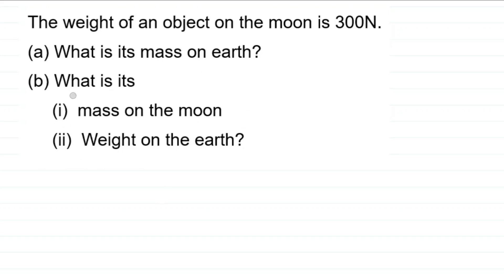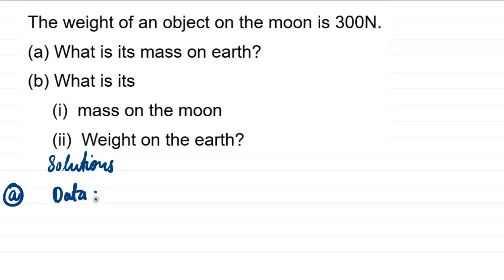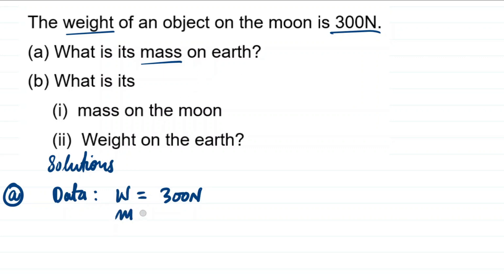The question is coming from the topic mass and weight. The weight of an object on the moon is 300 newtons. Part (a) asks: what is its mass on earth? Let's go straight into answering. We put our work in order — we write 'Solutions.' First of all, we put the data together. The information provided is: weight W = 300 newtons. Mass m is unknown.